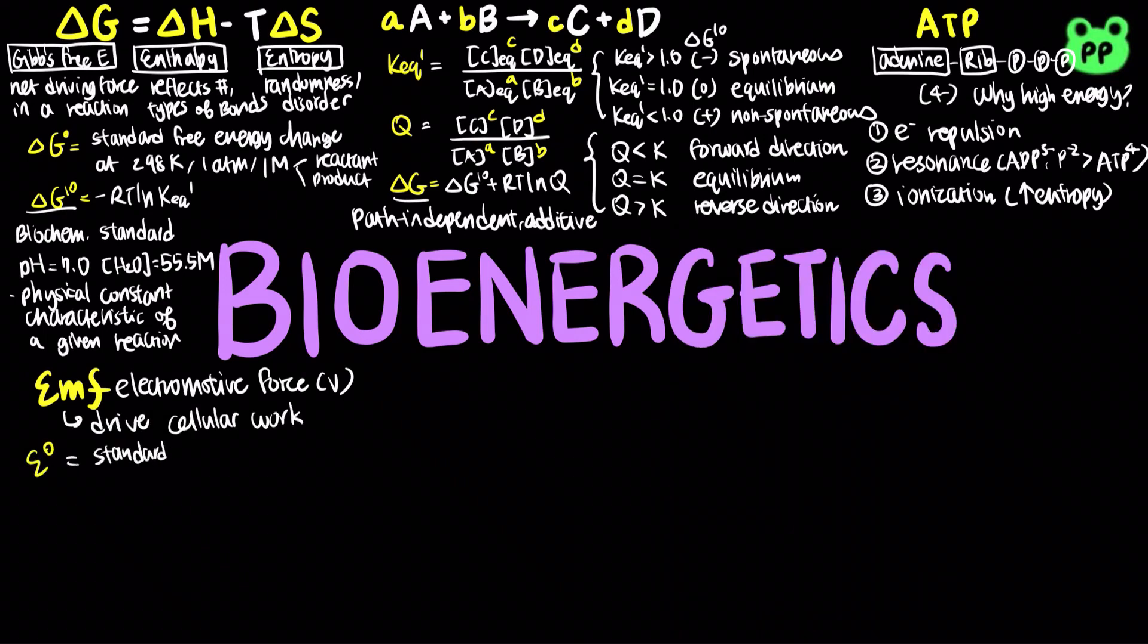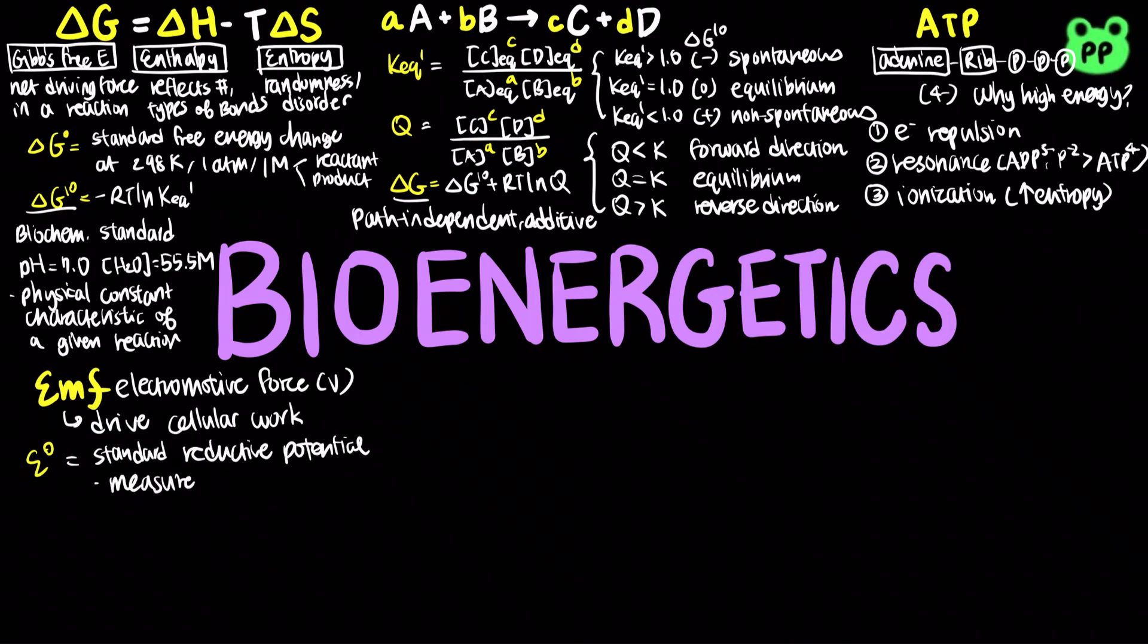The electron affinity of a chemical species is measured by the standard reduction potential. The higher the standard reduction potential, the higher the affinity. The standard reduction potential is related to the free energy change.